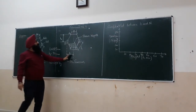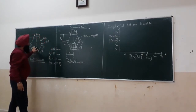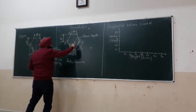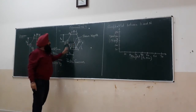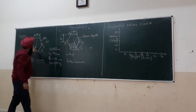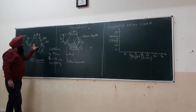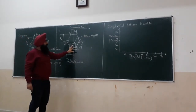The difference between the Porter governor and the Watt governor is that in the Porter governor we add a sleeve weight, called the dead weight. We add this weight in the Porter governor, whereas we do not add any weight in the Watt governor. So the Watt governor is the simple centrifugal type, and the Porter governor uses a dead weight.